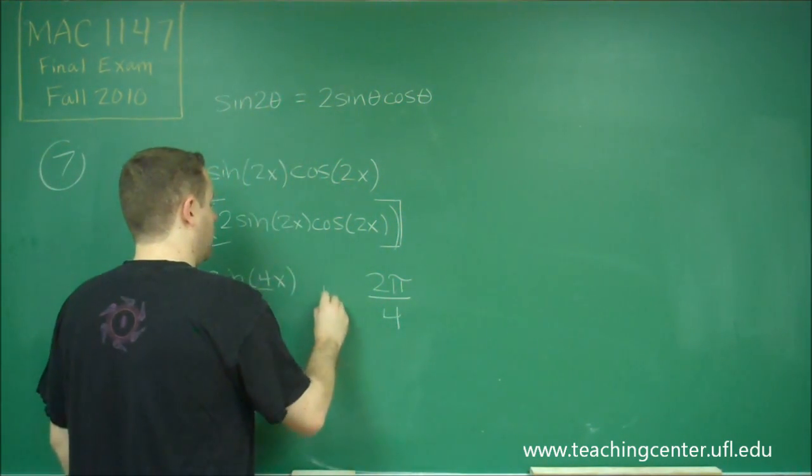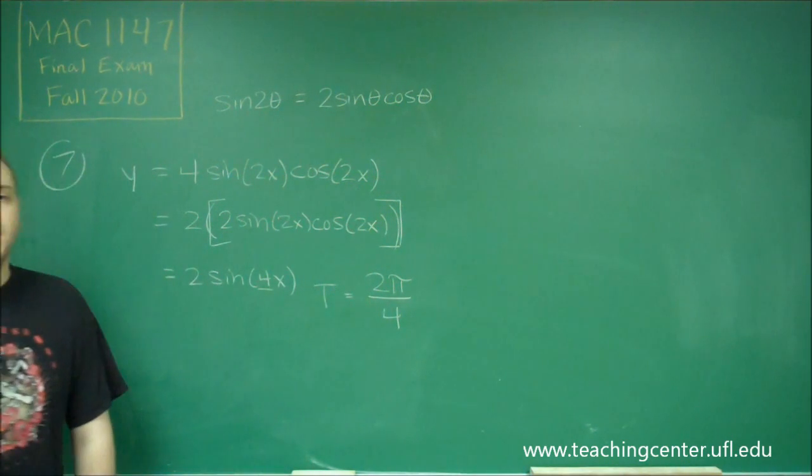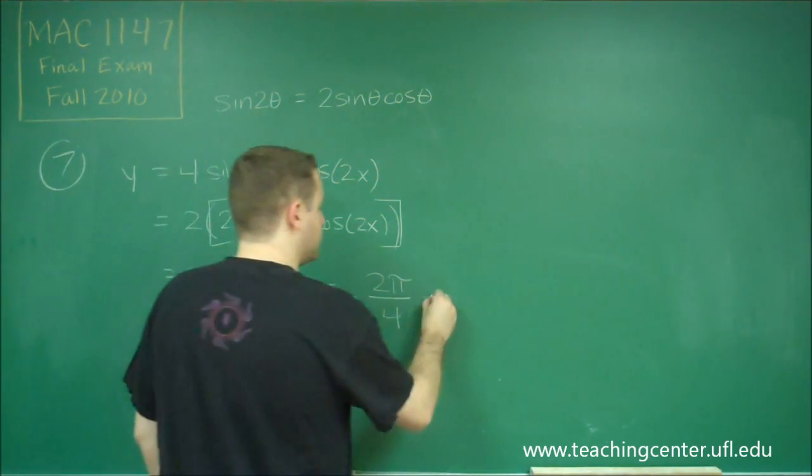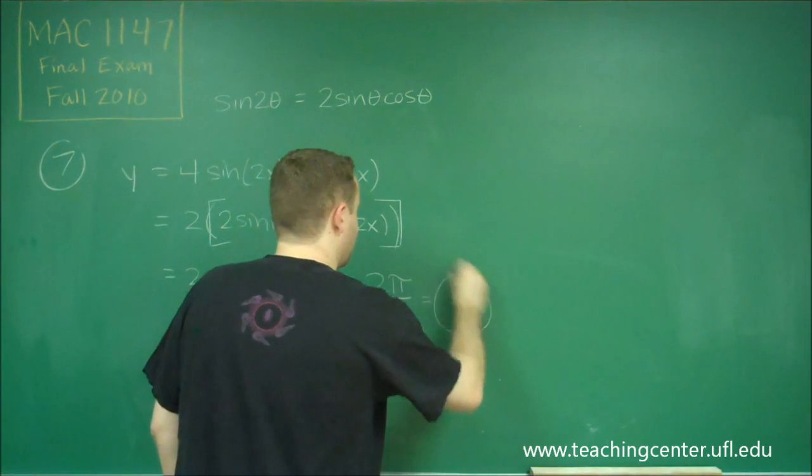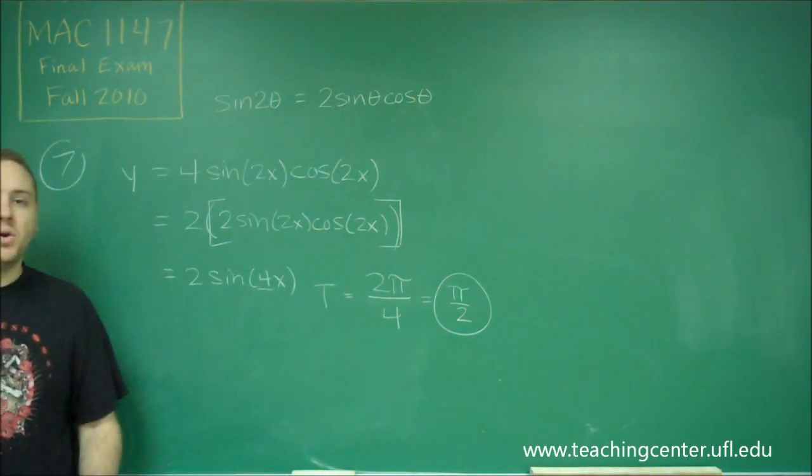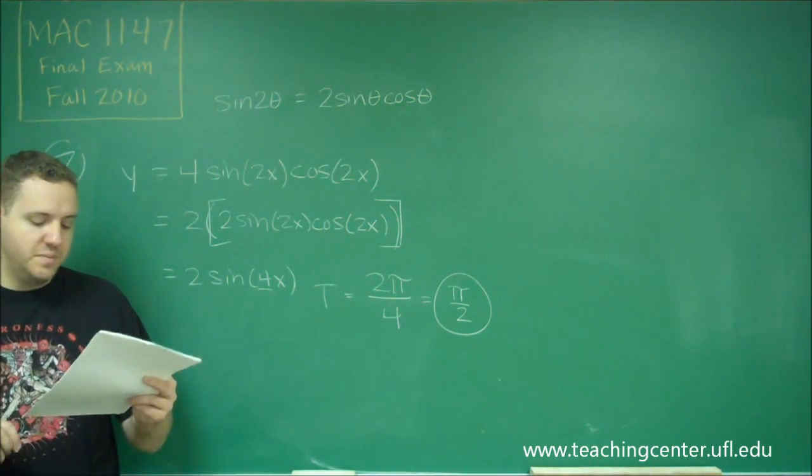So our period, or capital T, is 2 pi over 4, which is pi over 2. So that would be answer choice B here.